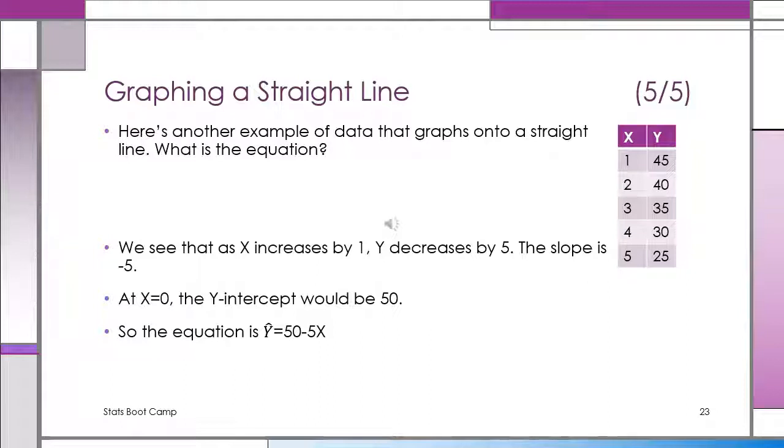We see that as X increases by 1 each time Y decreases by 5. So the slope is negative 5. This is an inverse relationship between X and Y. And obviously when X is 0, the Y intercept would be 50 if we extend it. And the equation ends up being Y hat is equal to 50 minus 5X.